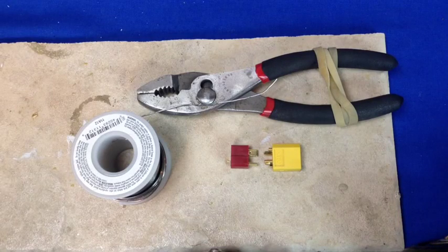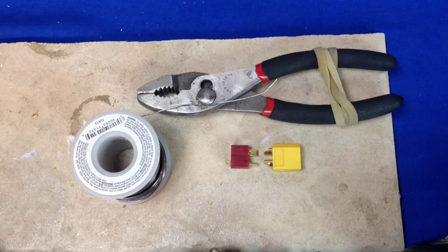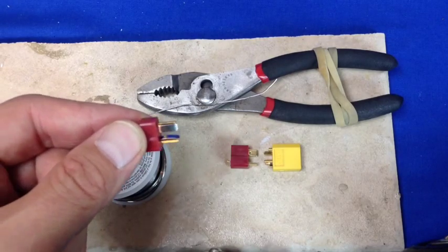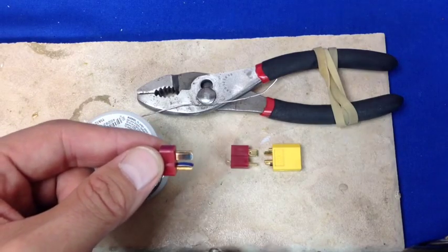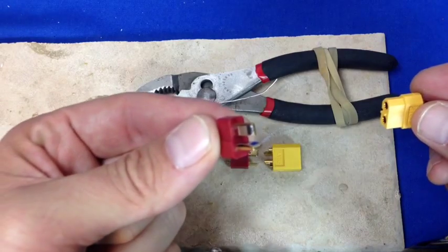Hey guys, 7demo7 here to give you a quick tutorial on how to make an adapter plug from a T or Dean style plug to an XT60 plug. Basically if you've got a model that has this on it and you've got a battery that looks like this, you'll need these components.